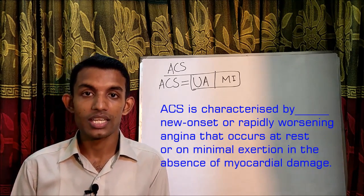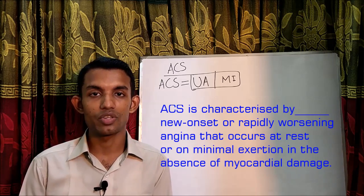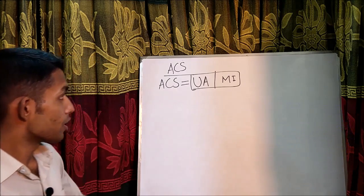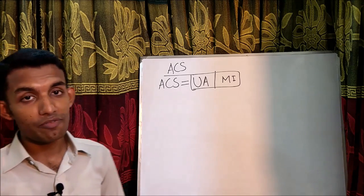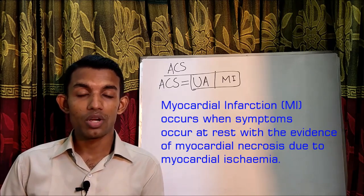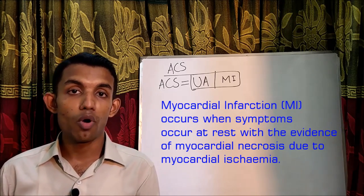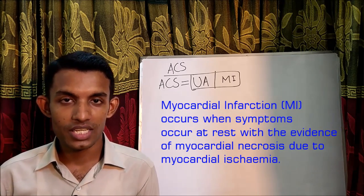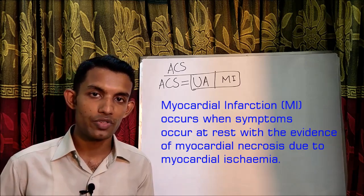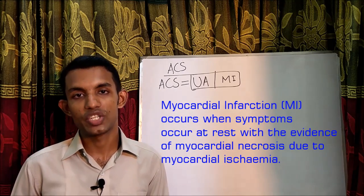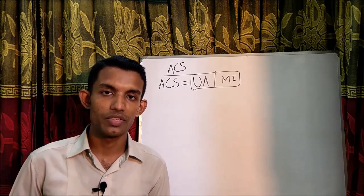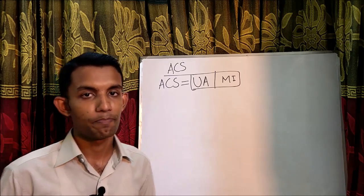Unstable angina occurs in the absence of myocardial damage. Myocardial infarction occurs when symptoms occur at rest with evidence of myocardial necrosis due to myocardial ischemia. Now, the pathophysiology of acute coronary syndrome or MI.